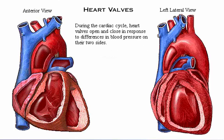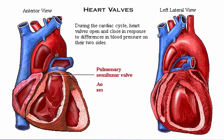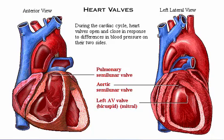During the cardiac cycle, the heart valves open and close in response to differences in the blood pressure on their two sides. These illustrations show the pulmonary semilunar valve, the aortic semilunar valve, the left atrioventricular or AV valve — also known as the bicuspid valve — and the right atrioventricular or AV valve, also known as the tricuspid valve.